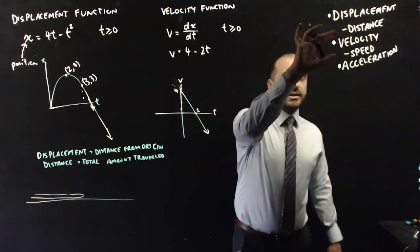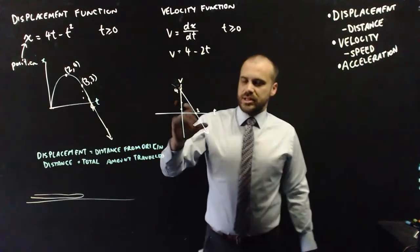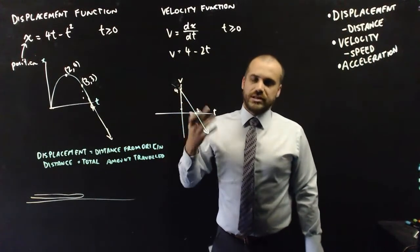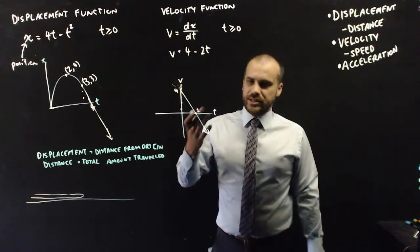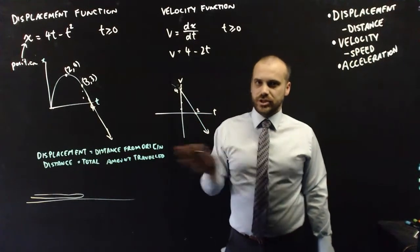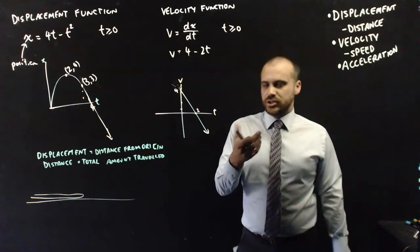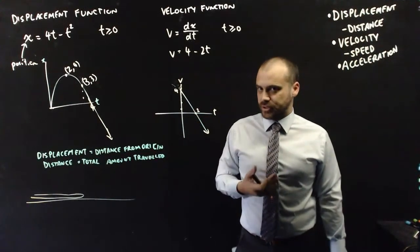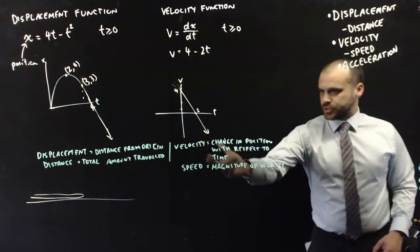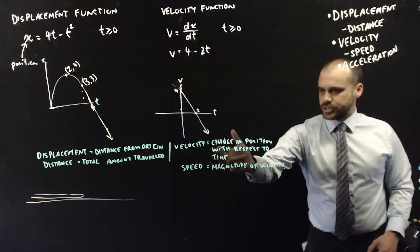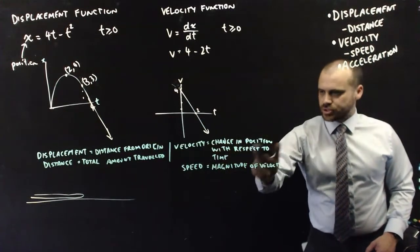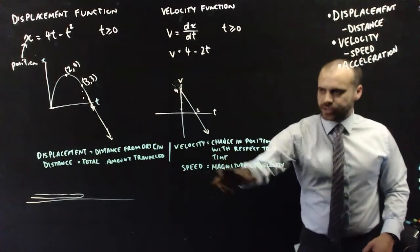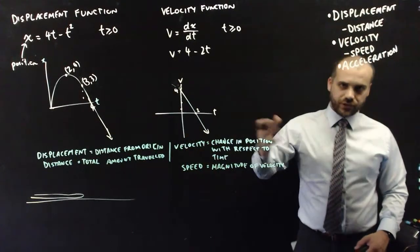Speed is just the absolute value of velocity. Speed doesn't care about which direction the object is moving — it just tells us how fast we're travelling. So velocity is the change in position with respect to time, and speed is equal to the magnitude of that velocity.